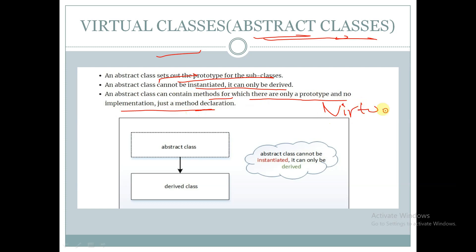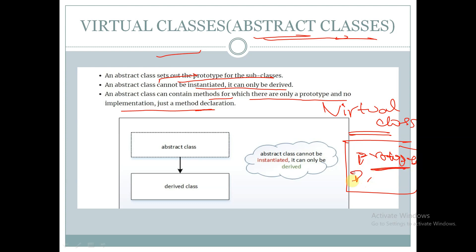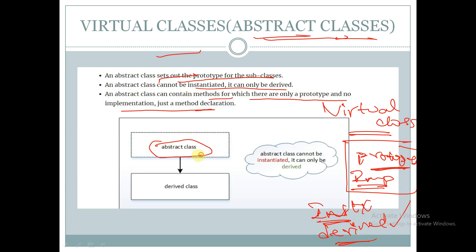A virtual class or abstract class has only a prototype, or some methods defined in it. They have no implementation of methods. Virtual classes cannot be instantiated — they can only be derived. An abstract class can only be used in a derived class.